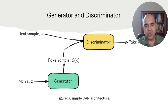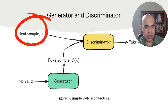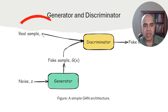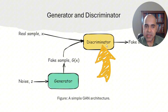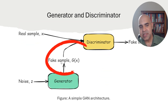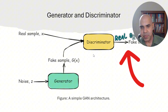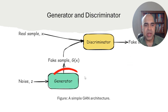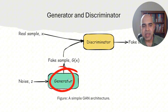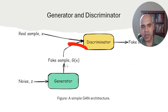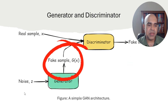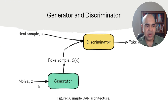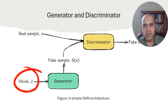Here we have a picture of how GAN works. The training data are the real samples, and the Discriminator is able to distinguish between real samples and fake samples, so it's a classifier. On the other hand, the Generator is a neural network that can generate fake samples, which are practically generated using some noise.